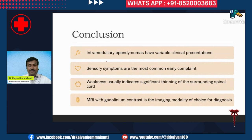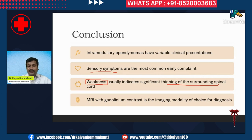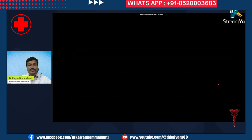In conclusion: intramedullary ependymomas have variable clinical presentations. Sensory symptoms are the most common early symptom. Weakness usually indicates thinning of the surrounding spinal cord — meaning the tumor is already large and has been growing for a long time. Diagnosis is usually made with MRI with gadolinium contrast, but the definitive diagnosis is made with biopsy during surgery.